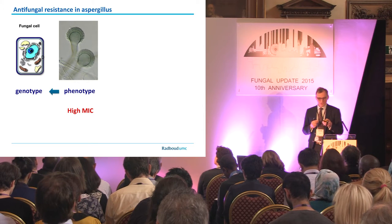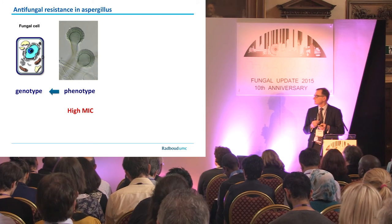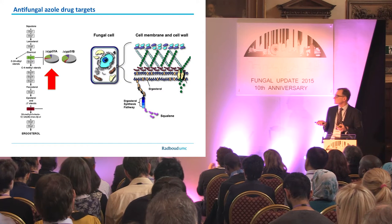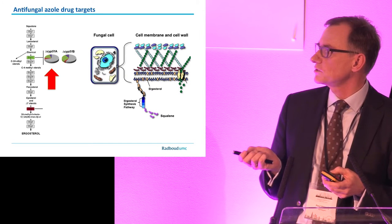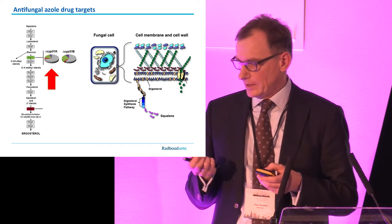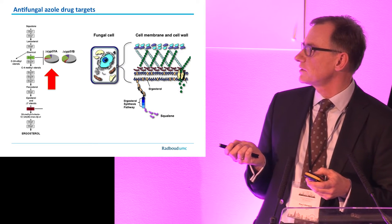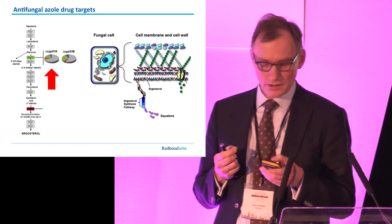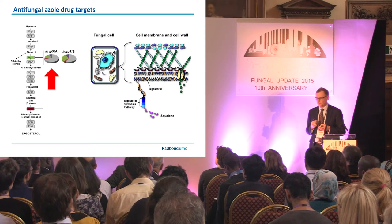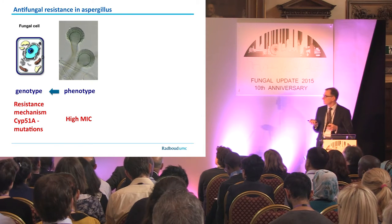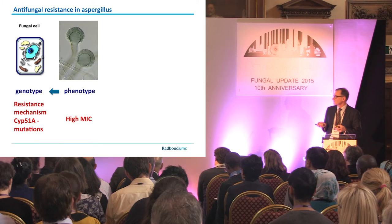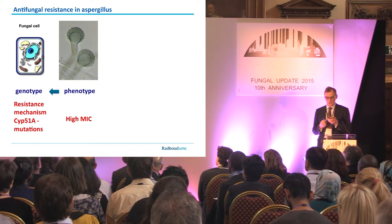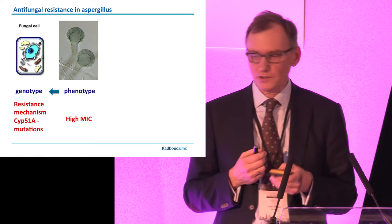The phenotype is characterized in the lab by a high MIC. Looking at the genotype: azoles act in the ergosterol biosynthesis pathway, which is incorporated into the cell membrane. The target of the azole is the CYP51A gene, and especially mutations within CYP51A confer azole resistance. Most resistance mechanisms are associated with the CYP51A gene, but quite a lot are not associated and we don't know the resistance mechanism. Up to now, over 20 different mutations have been described.